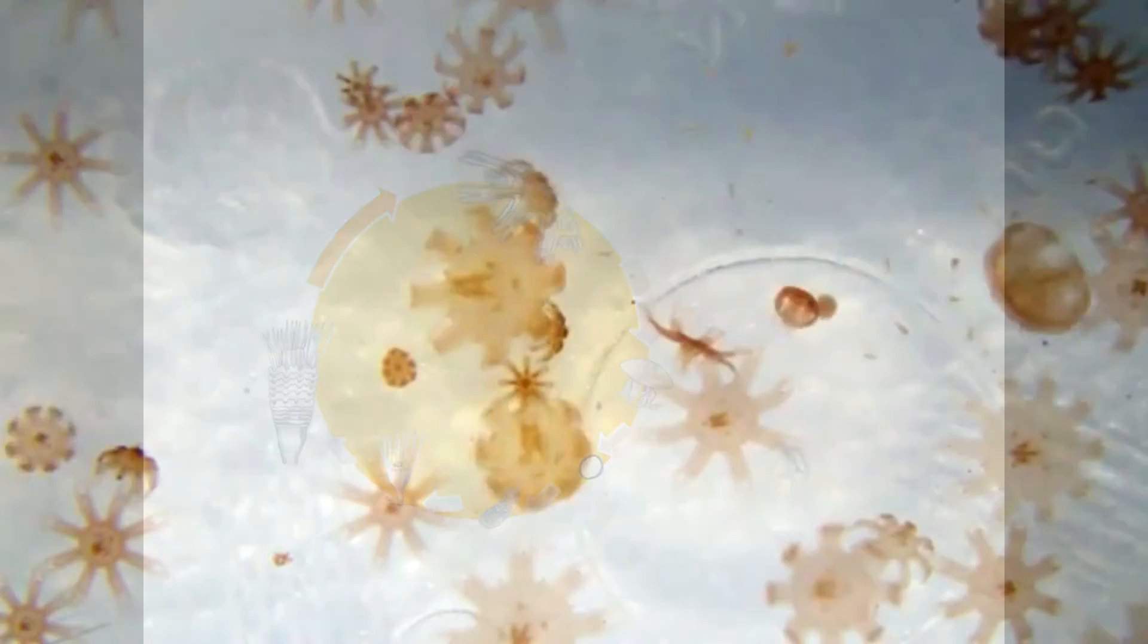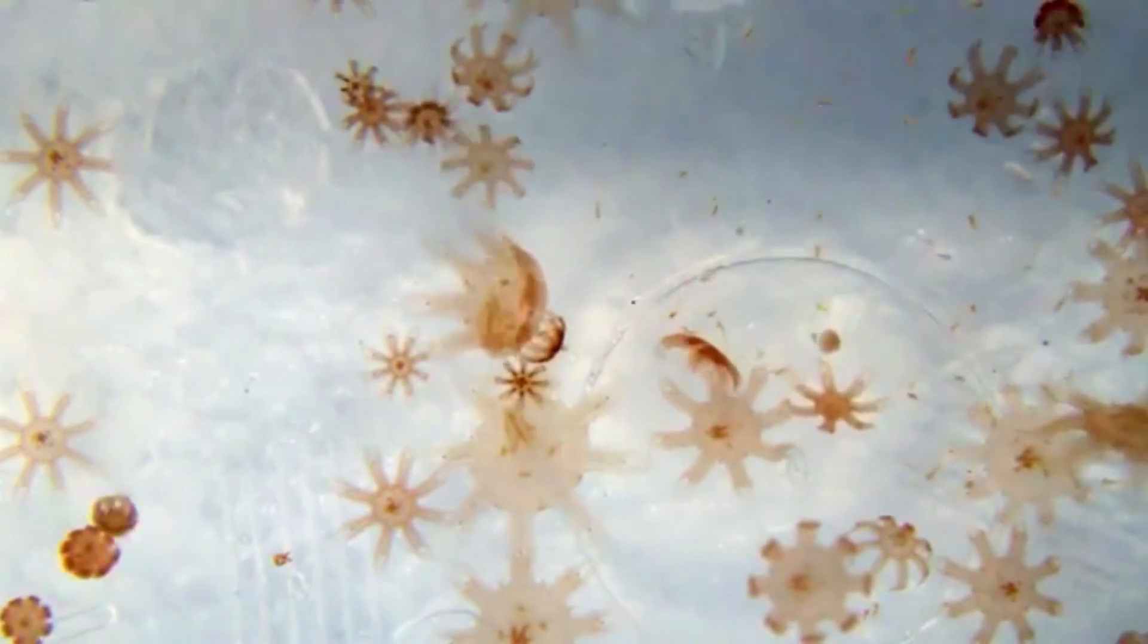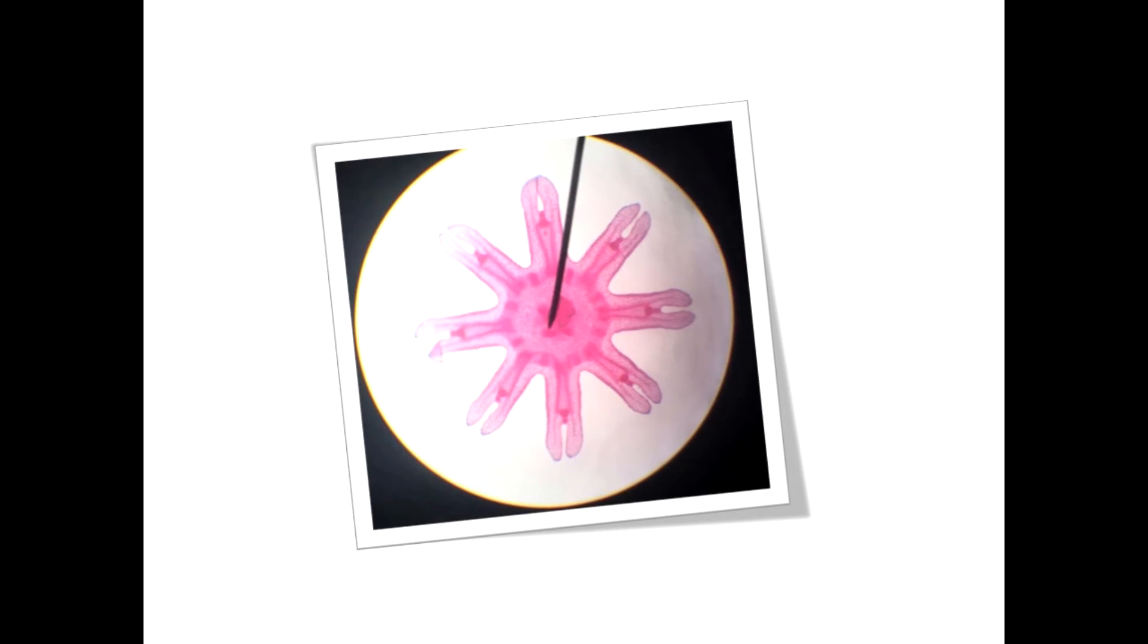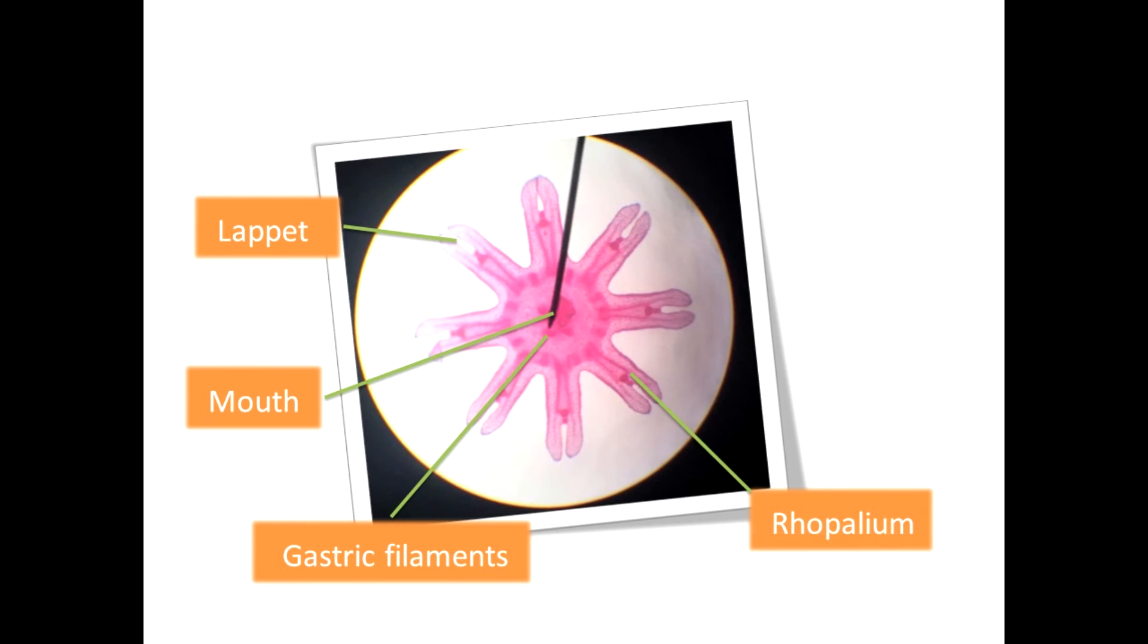Within a short time, the young ephyra is feeding on microplanktonic crustacea and larvae. It captures the prey on the lappets and moves the food towards the mouth.